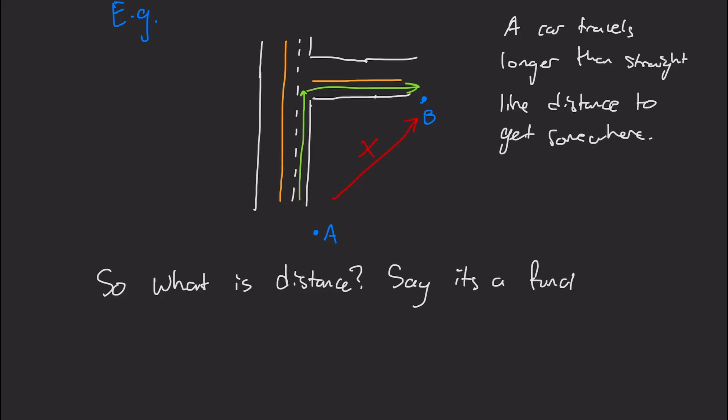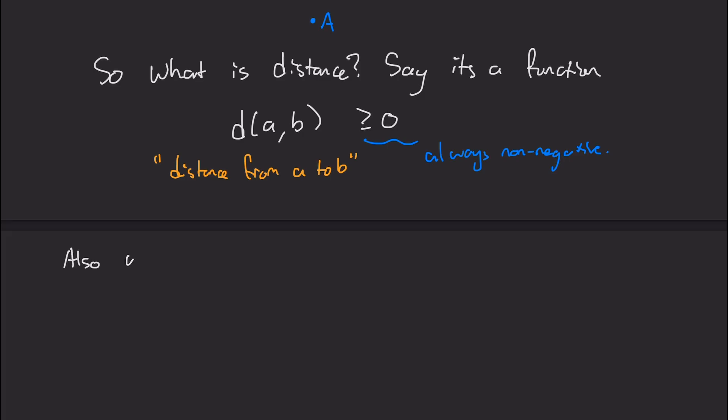I'm going to define distance to be a function, d of a, b, where a and b are points, and it's always going to be non-negative. So d of a, b, you can read as the distance from a to b, and we should never have a negative distance. And we also want a few properties.